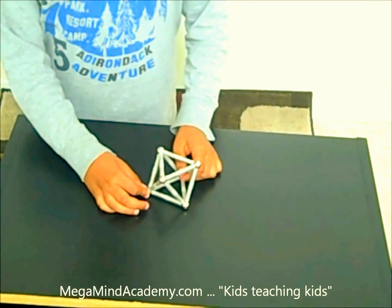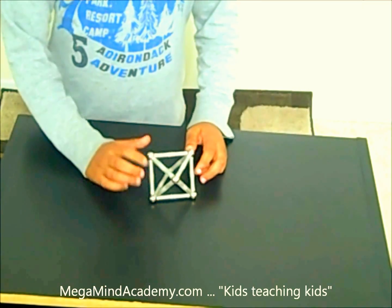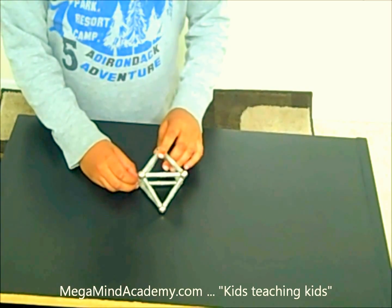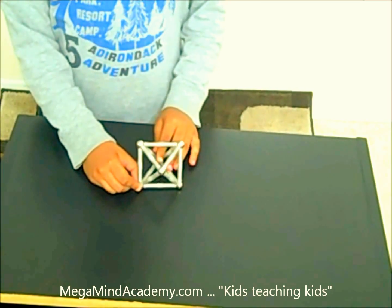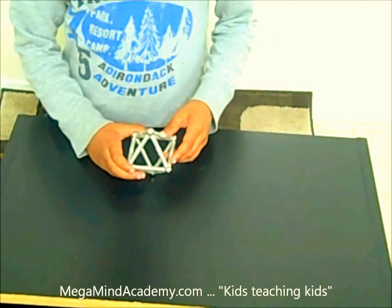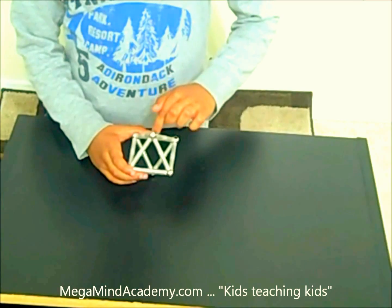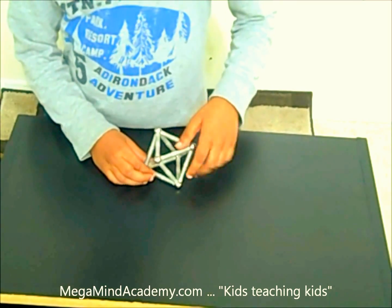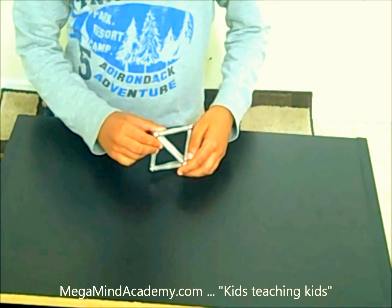While I was making this model of an octahedron, I learned something new. I learned that four faces meet at each vertex. 1, 2, 3, 4 faces met at this vertex. 1, 2, 3, 4 faces met at this vertex.